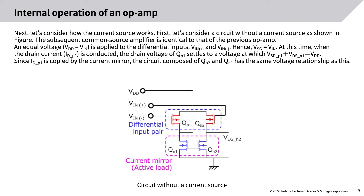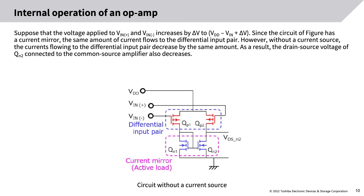Next, let's consider how the current source works. Consider a circuit without a current source. An equal voltage, VDD minus VIN, is applied to the differential inputs VIN+ and VIN-. Hence, VSG equals VIN. When the drain current IDP1 is conducted, the drain voltage of QP1 settles to a voltage at which VSDP1 + VDSN1 = VDD. Since IDP1 is copied by the current mirror, the circuit composed of QP2 and QN1 has the same voltage relationship. If the voltage applied to VIN+ and VIN- increases by delta V, the currents flowing to the differential input pair decrease by the same amount. As a result, the drain-source voltage of QN2 connected to the common source amplifier also decreases.